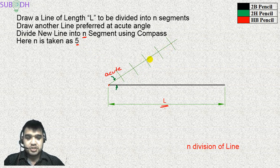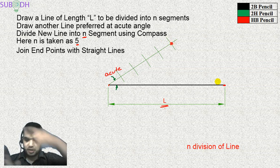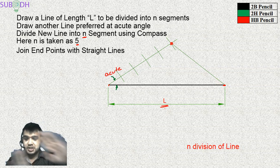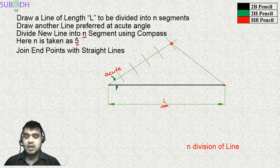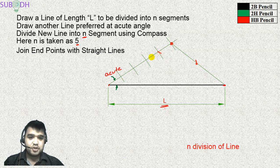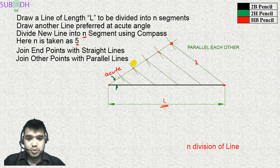Now I join the last marked point on the auxiliary line to the end point of the original line. Then, using a drafter or set square, I draw lines parallel to this joining line from each of the other marked points down to the original line. These parallel lines create the equal division points on the original line.